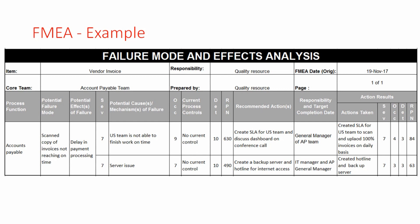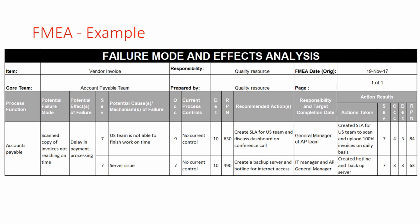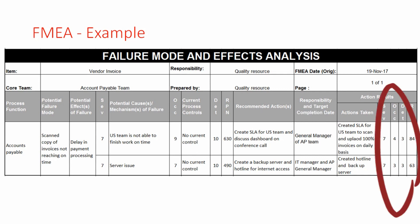After two months, the actions were reviewed. SLAs had been created for the US team to scan and upload 100% of invoices on a daily basis. A dashboard had been created and circulated. For the second issue, the hotline and backup server had also been set up. The severity scores remained the same, but the occurrence and detection scores dropped drastically. The resulting RPN scores were 84 and 63 — both below 100 — meaning these two issues are now resolved and the process is under control.